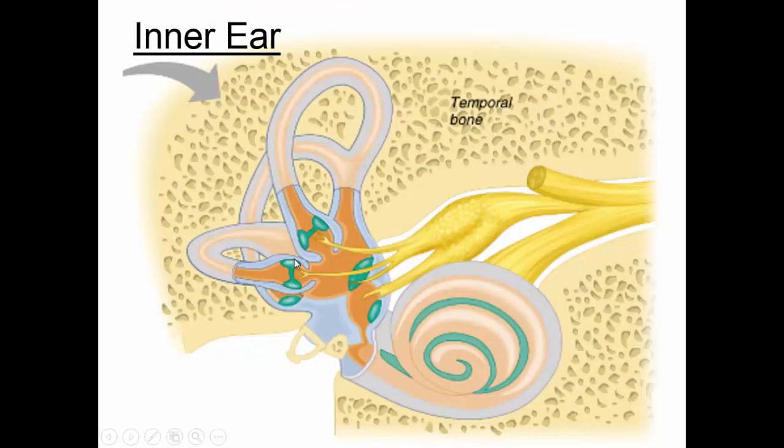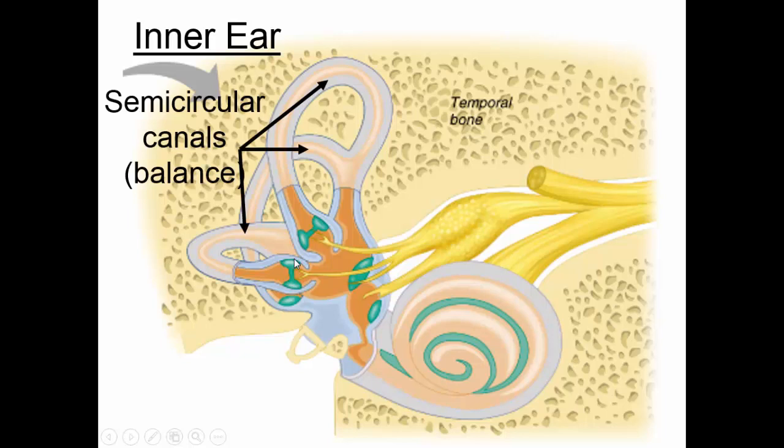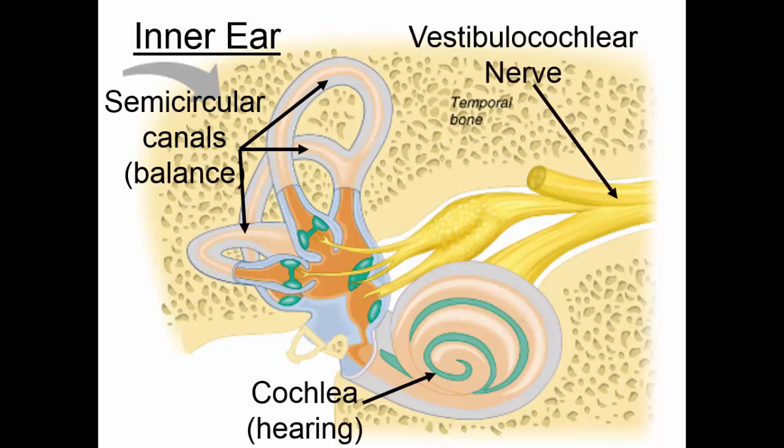In the inner ear, we have the semicircular canals that are involved in balance and the cochlea, which is involved in hearing. The vestibulocochlear nerve, or cranial nerve eight, has branches that go to both organs. It picks up impulses from these organs and directs them to the appropriate portion of the brain for interpretation.